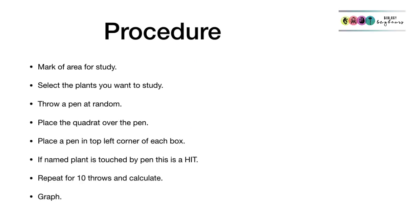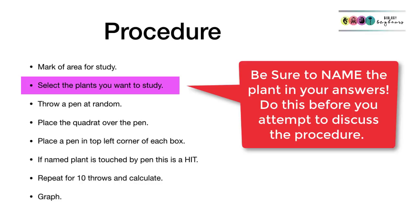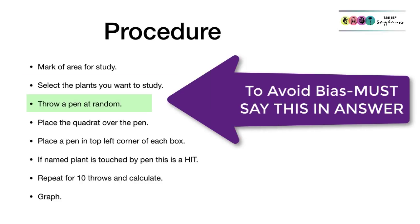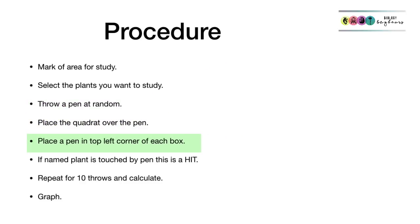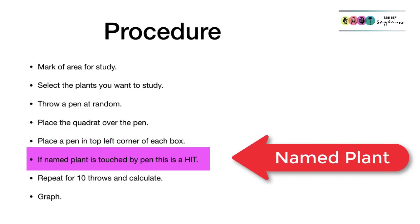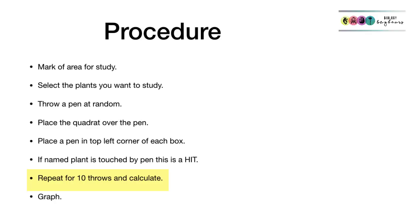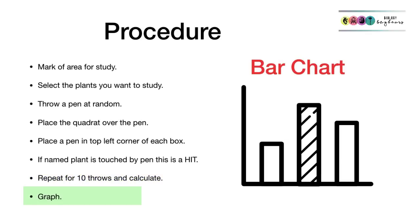To summarise the procedure: mark off the area you wish to study. Select and name the plant you wish to study. Throw a pen at random over your shoulder to ensure there is no bias. Place the quadrat over the pen and put the pen into the top left-hand corner of each box. If the named plant is touched by the pen, it's a hit. Repeat this for 10 throws, put your results in a table, then calculate and graph.